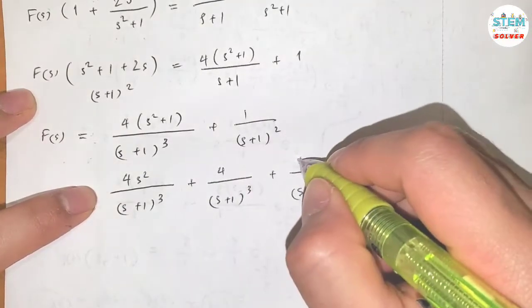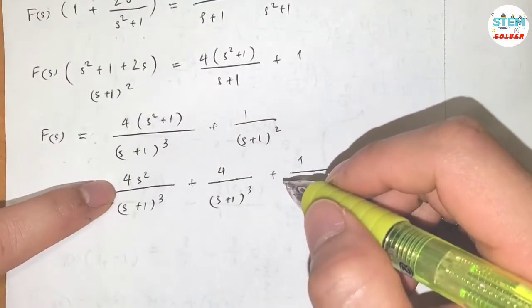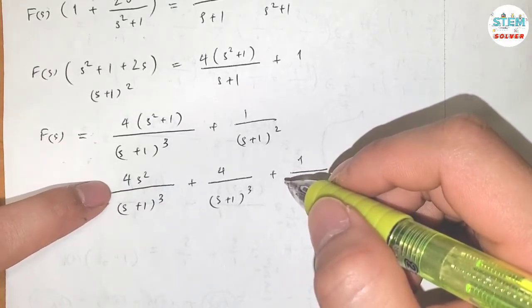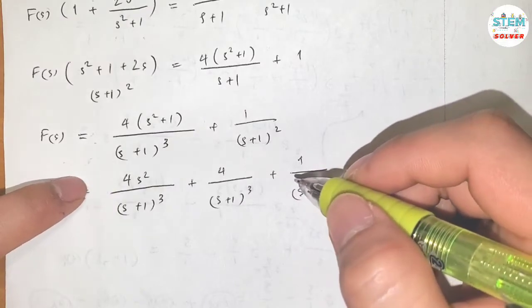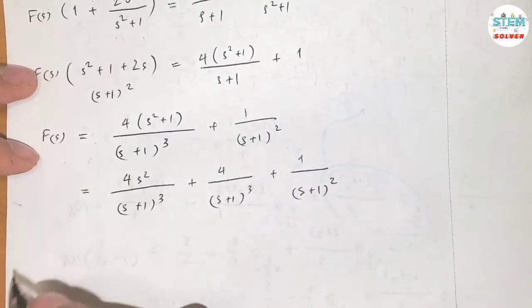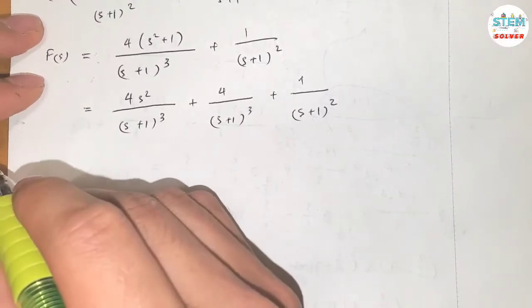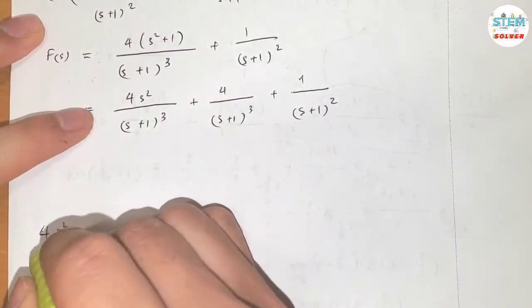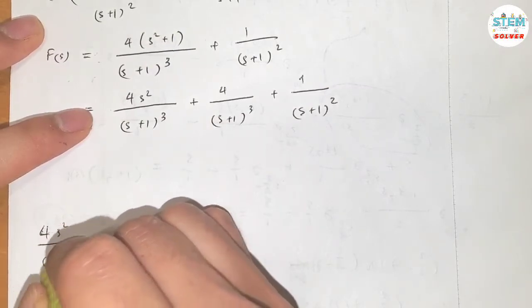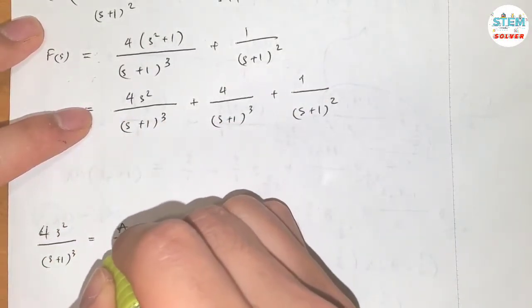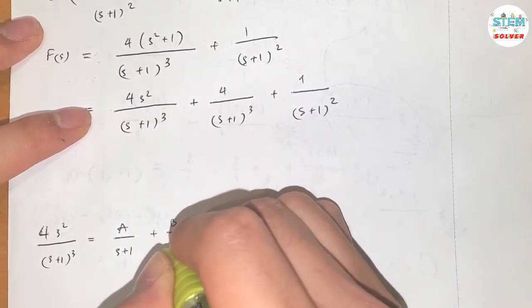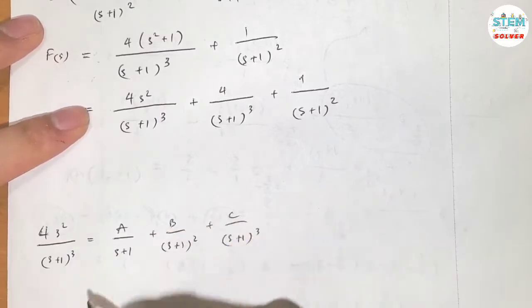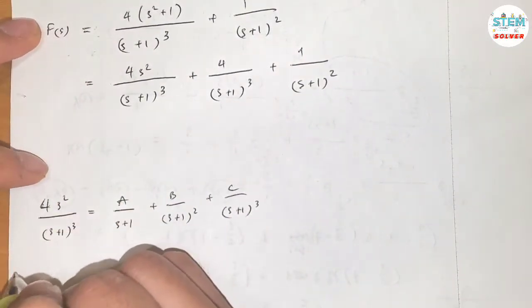We can find the inverse Laplace of the last two terms easily, but for the 4s² over (s plus 1) cubed term we cannot find it directly. So I'm going to use partial fractions: 4s² over (s plus 1) cubed equals A over (s plus 1) plus B over (s plus 1) squared plus C over (s plus 1) cubed.